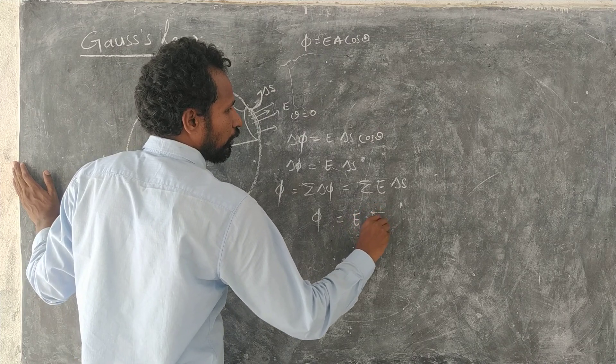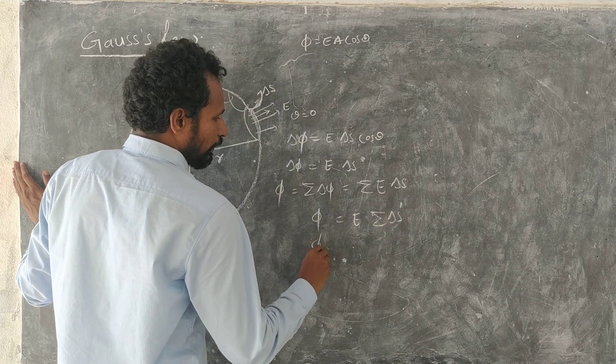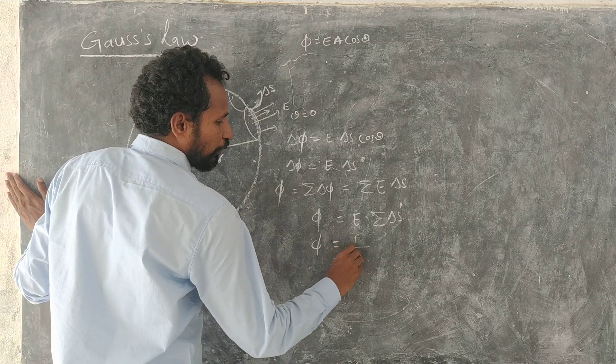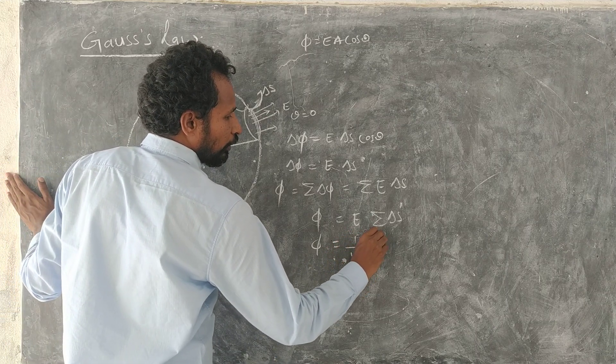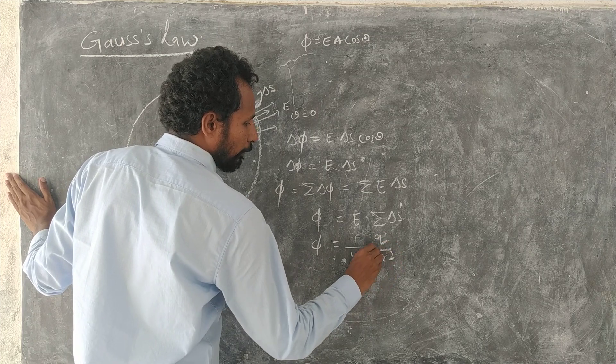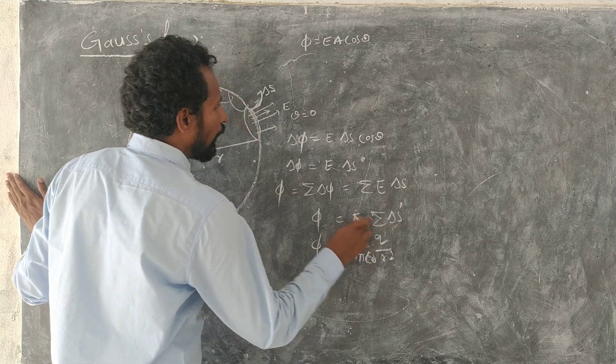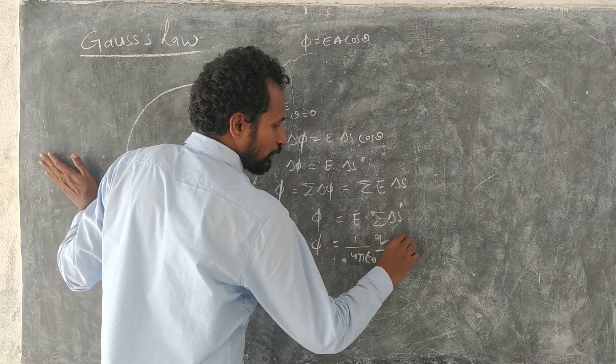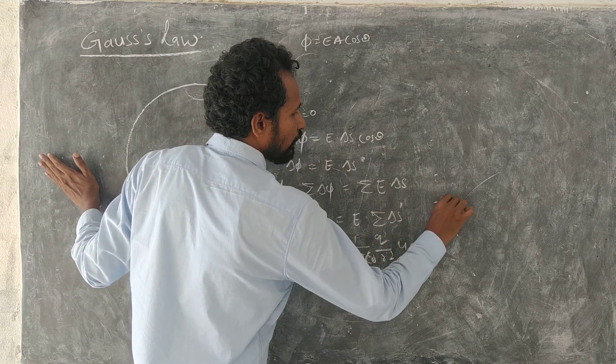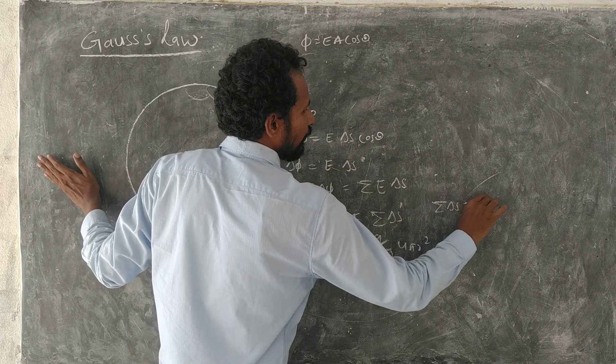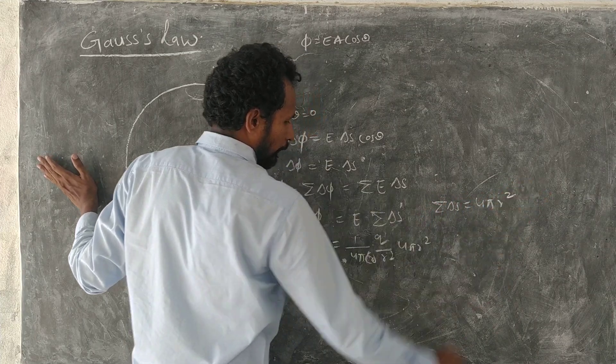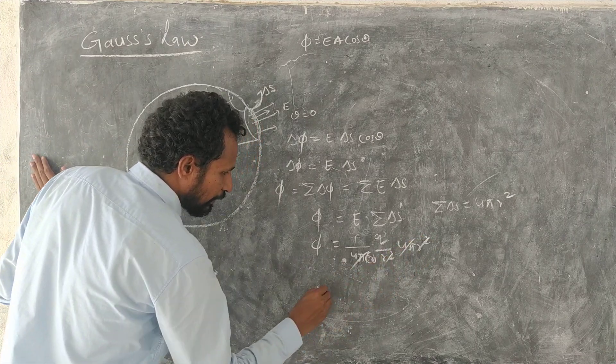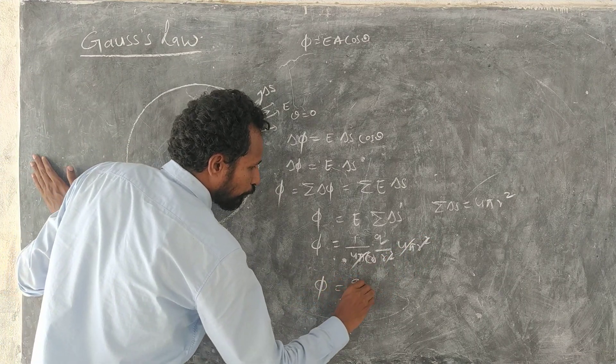And this phi is equal to, E is what? Electric field formula 1 by 4 pi epsilon 0 q by r square, and summation of all small areas it gives the surface area of the sphere. Now surface area of the sphere is 4 pi r square. Summation of delta s is 4 pi r square. Now 4 pi, 4 pi, r square, r square cancel. Phi is equal to q by epsilon 0.